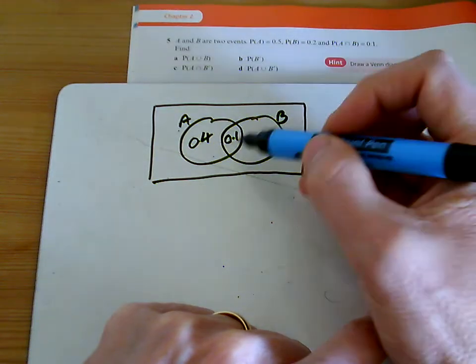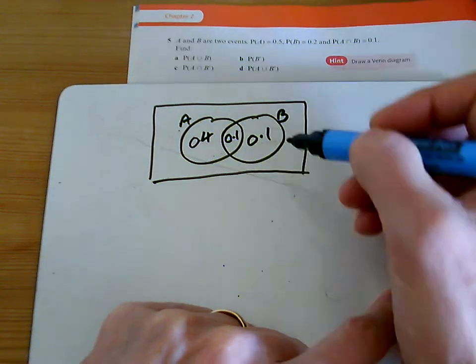Same idea with B here. We've already got 0.1, so we only need another 0.1 there.